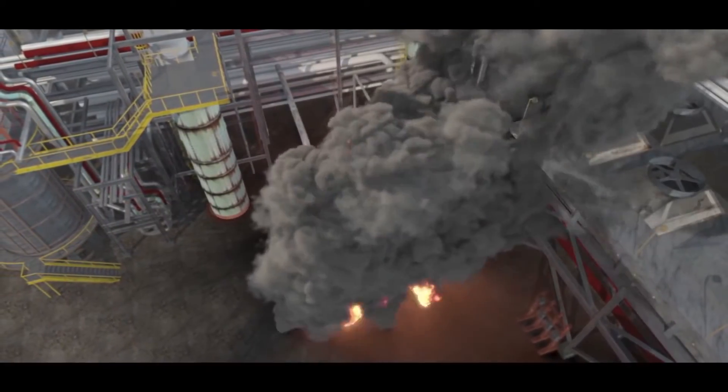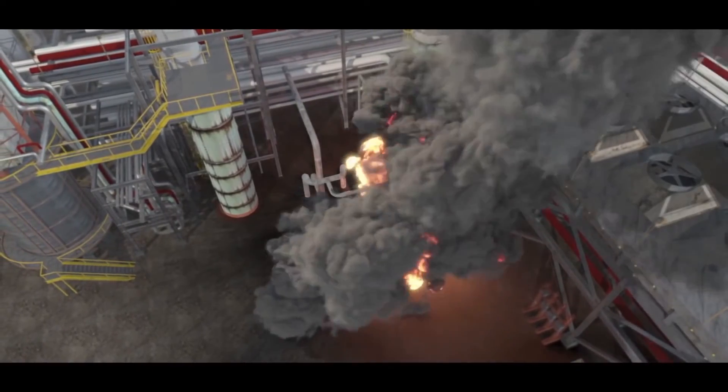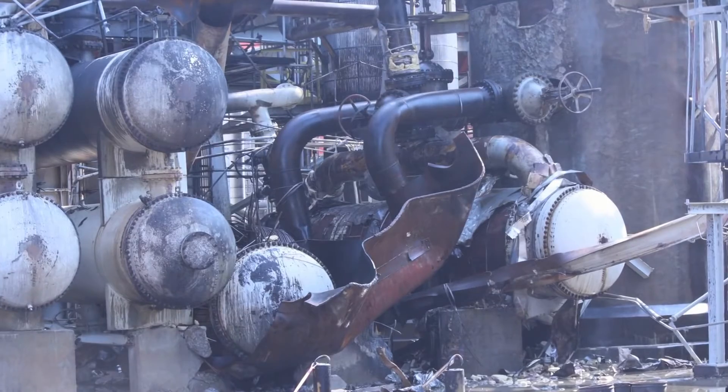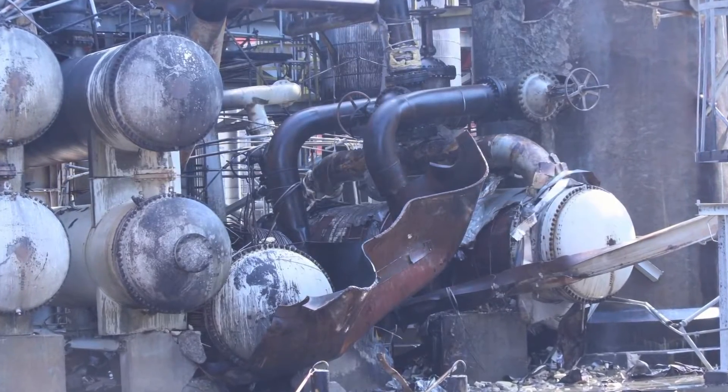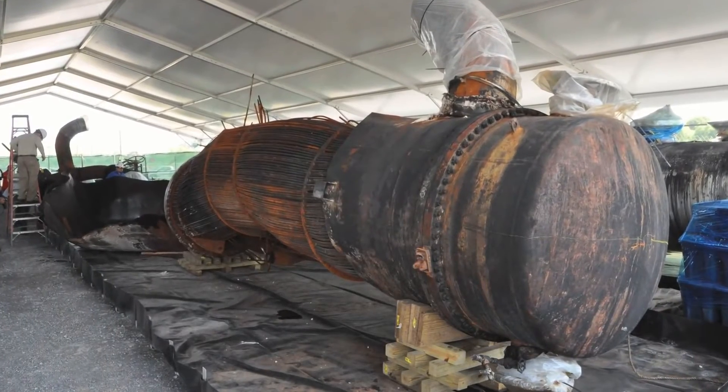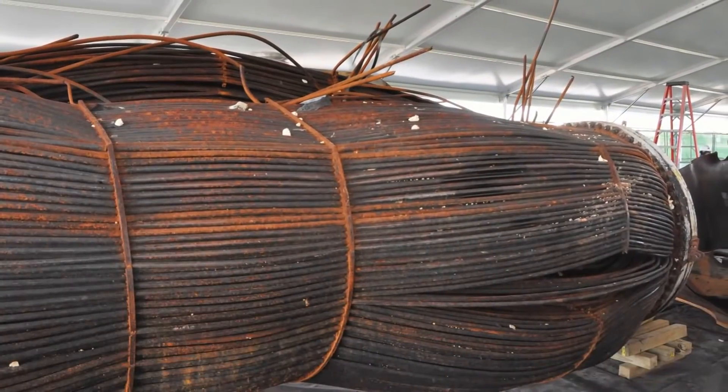167 Williams employees and contractors reported being injured. During its investigation, the CSB found that prior to the explosion, the standby reboiler had been out of service for over a year, isolated from the process by closed block valves.